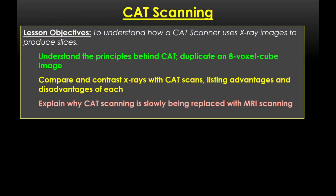In this video I'm going to go through how a CT scanner works. By the end you should understand the principles behind CT scanning, be able to duplicate an eight voxel cube image, compare and contrast simple X-rays with CT scans giving advantages of each type, and explain why CT scanning is slowly being replaced by MRI scanning.